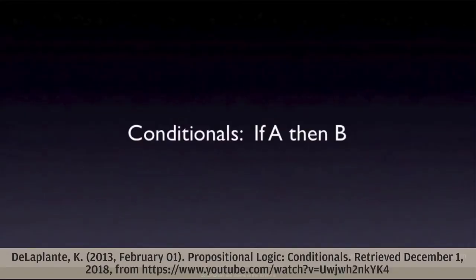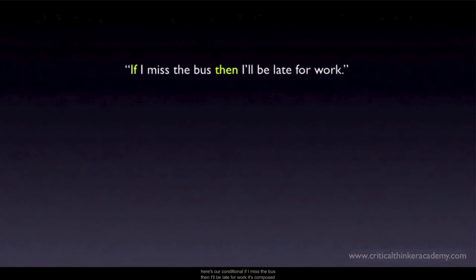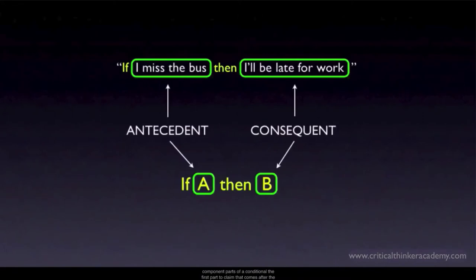Conditionals are claims of the form: if A is true, then B is true. Here's our conditional: if I miss the bus, then I'll be late for work. It's composed of two separate claims — 'I miss the bus' and 'I'll be late for work.' The first part, the claim that comes after the 'if,' is called the antecedent. The second part, the claim that comes after the 'then,' is called the consequent.